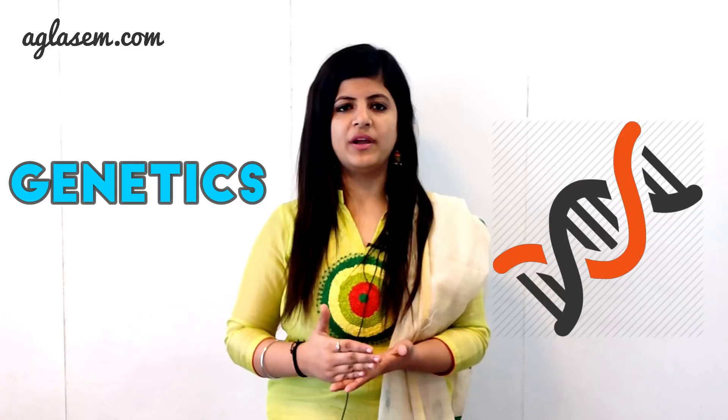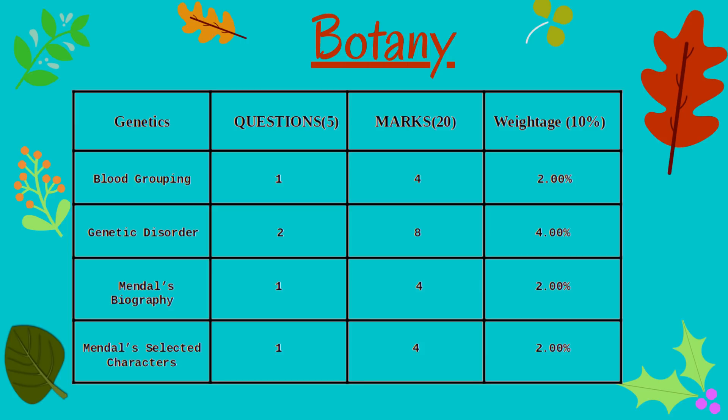Now I will tell you about the units that carry around 20 marks. The first is Genetics. In this unit, the most important topic is Genetic Disorder, and other topics carry equal weightage. Topics under this unit are: Blood Grouping (1 question, 4 marks), Genetic Disorder (2 questions, 8 marks), Mendel's Biography (1 question, 4 marks), and Mendel's Selected Characters (1 question, 4 marks).